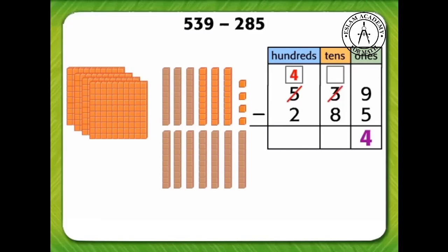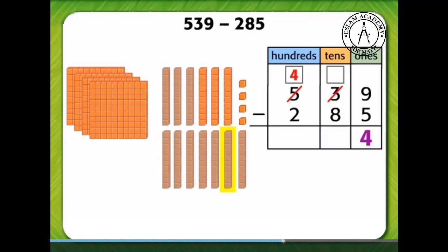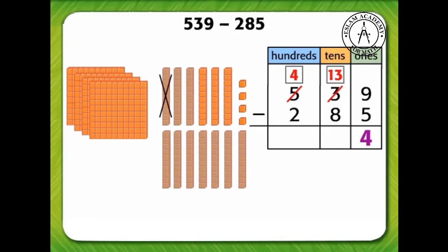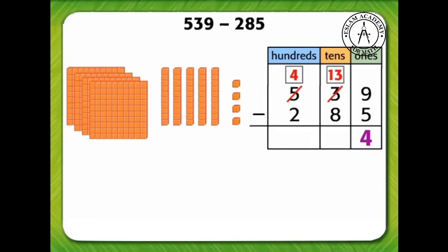One, two, three, four, five, six, seven, eight, nine, ten, eleven, twelve, thirteen. We can subtract eight tens from 13 tens: one, two, three, four, five, six, seven, eight. That leaves five tens. Write five in the tens column on the place value chart.